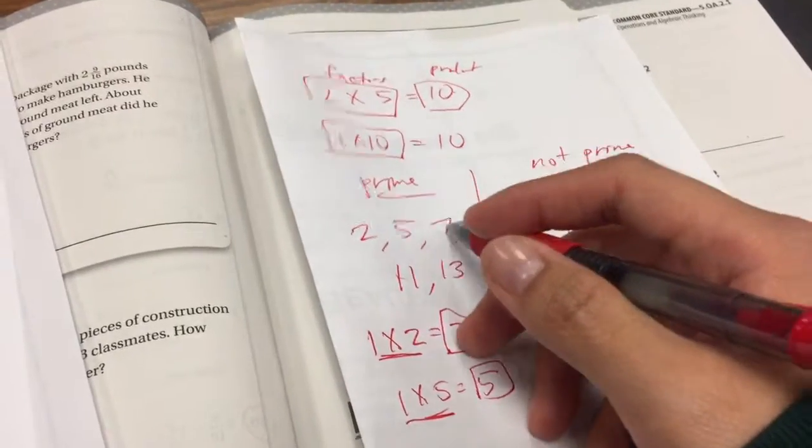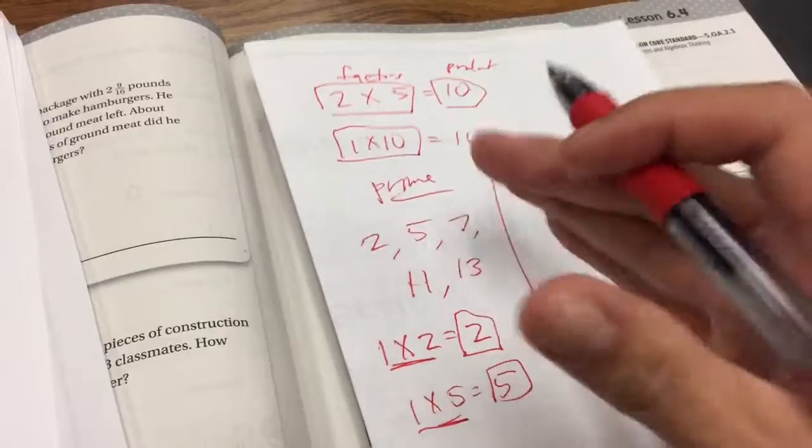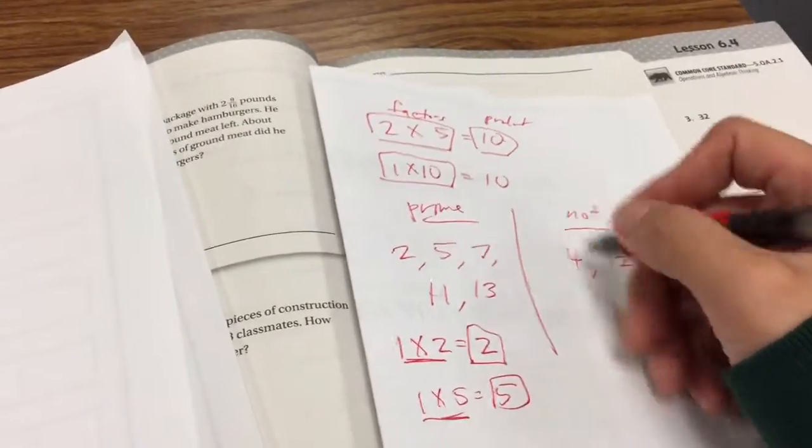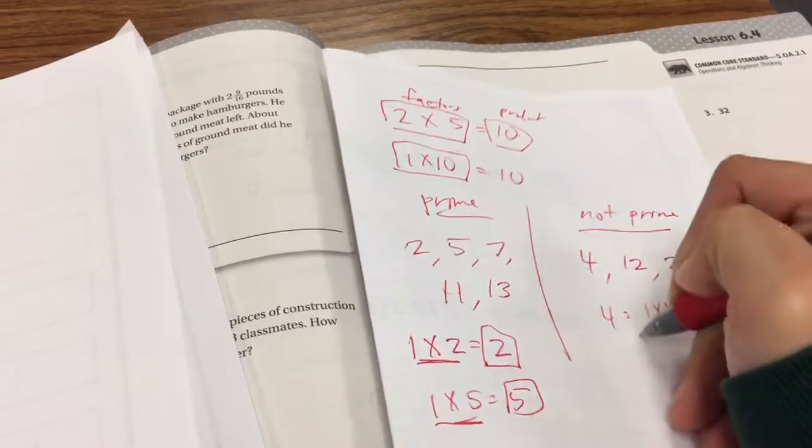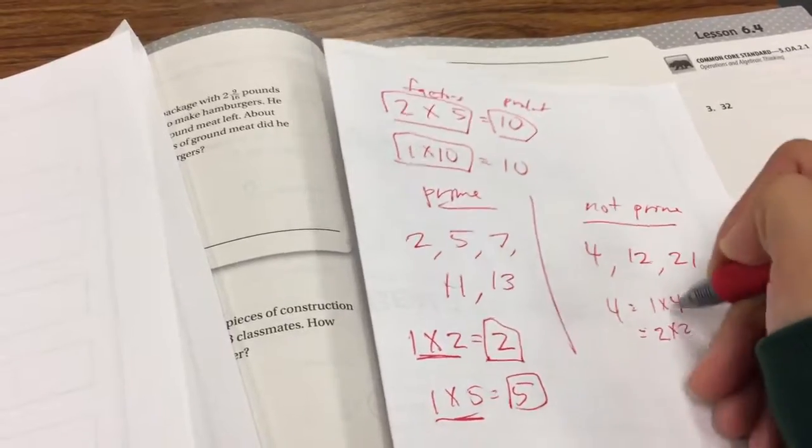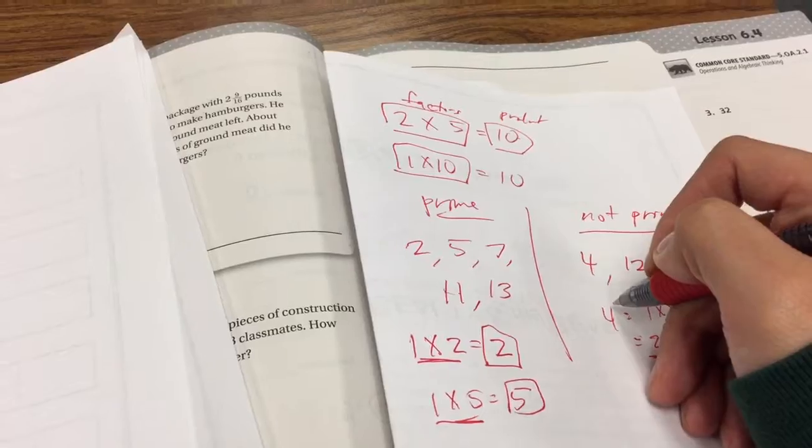Same with 7. You could only do 1 times 7, 11, 1 times 11, 13, 1 times 13 to get to those individual numbers. However, if a number is not prime, then not only can you do 4 is 1 times 4, but it's also 2 times 2 equals 4. So here it's not prime because now we have another factor, the number 2, to get to 4.